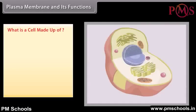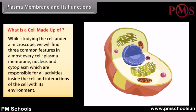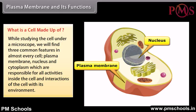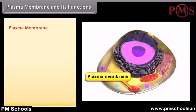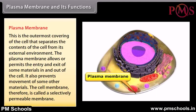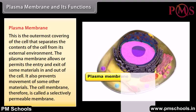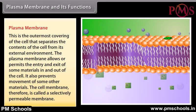What is a cell made up of? While studying a cell under a microscope, we find three common features in almost every cell: plasma membrane, nucleus, and cytoplasm. These are responsible for all activities inside the cell and interactions of the cell with its environment. The plasma membrane is the outermost covering of the cell that separates the contents of the cell from its external environment.